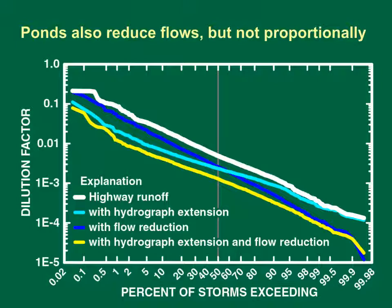Based on the median performance statistics from the International BMP database, ponds also reduce flows, but not proportionally to swales. This graph shows the potential effectiveness of a detention pond for modifying downstream storm flows. This example dilution factor analysis was done using data from the USGS stream gauge on Sasko Brook near Southport, Connecticut. The vertical axis is the dilution factor on a logarithmic scale ranging over five orders of magnitude. The horizontal axis is a probability scale indicating the percentage of storms with dilution factors that equal or exceed a given value. The white line shows the dilution factors from highway runoff without BMP treatment. The light blue line represents potential effects of stochastic hydrograph extension values from a pond that may range from 0 to 18 hours. The dark blue line represents potential effects of stochastic flow reduction. The yellow line shows the dilution factors that would result if both extension and reductions are modeled.